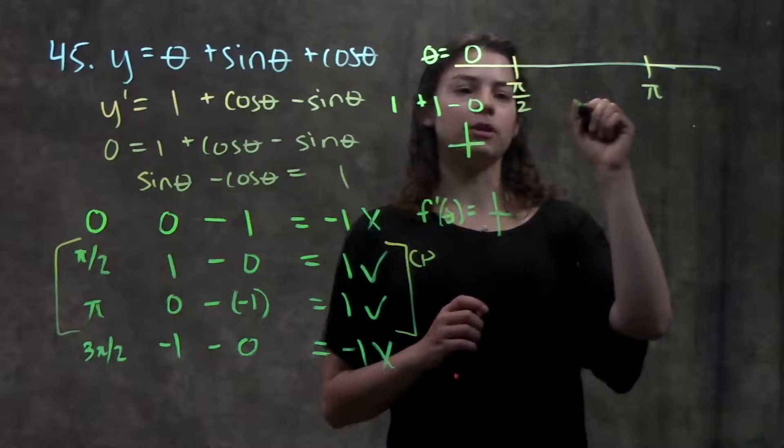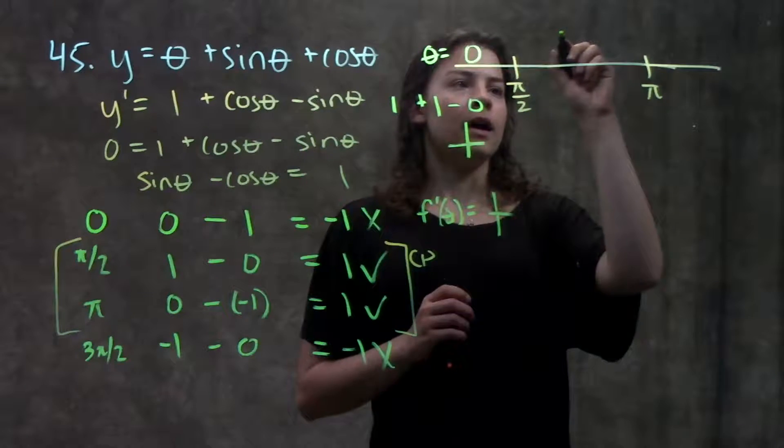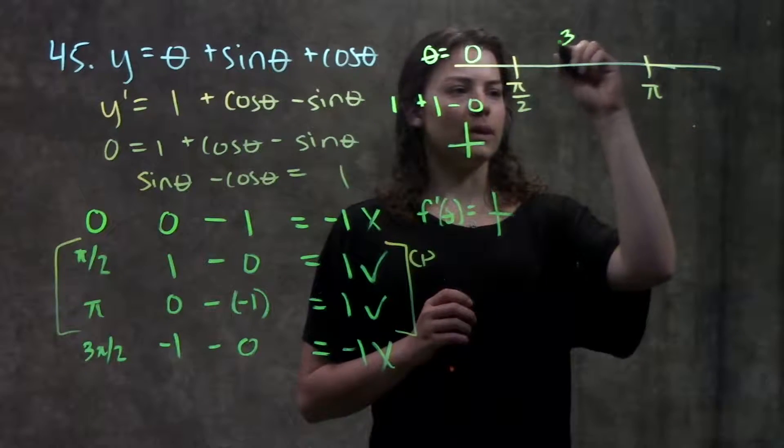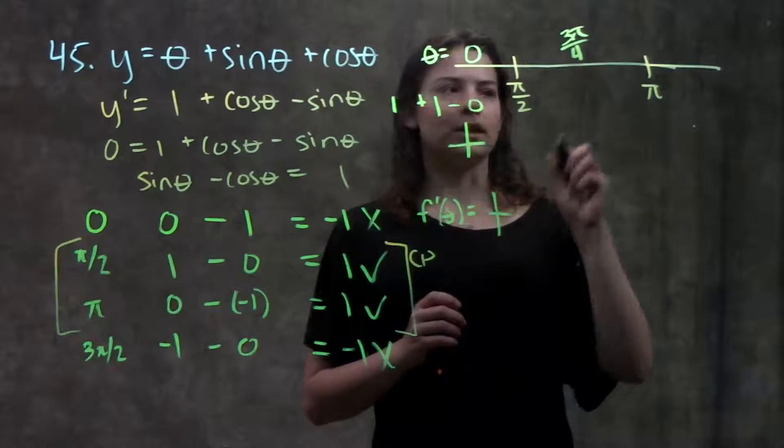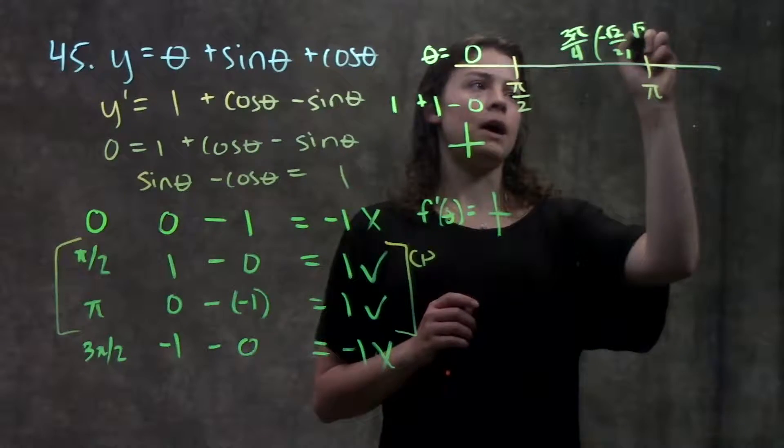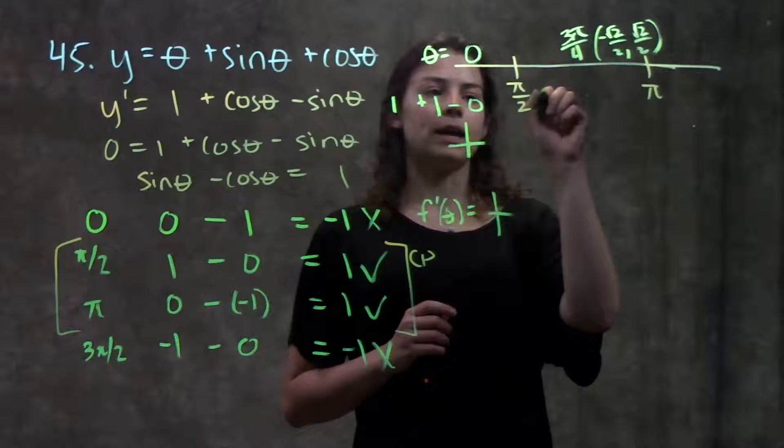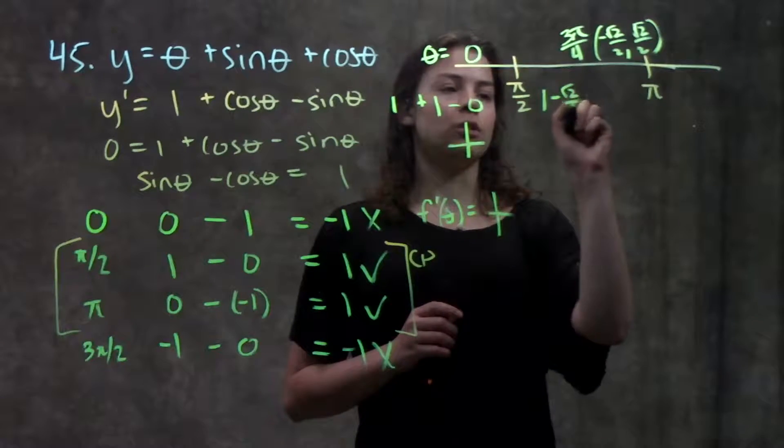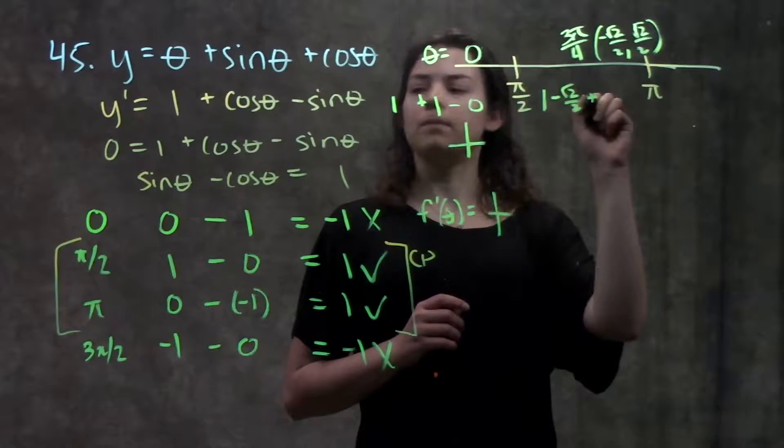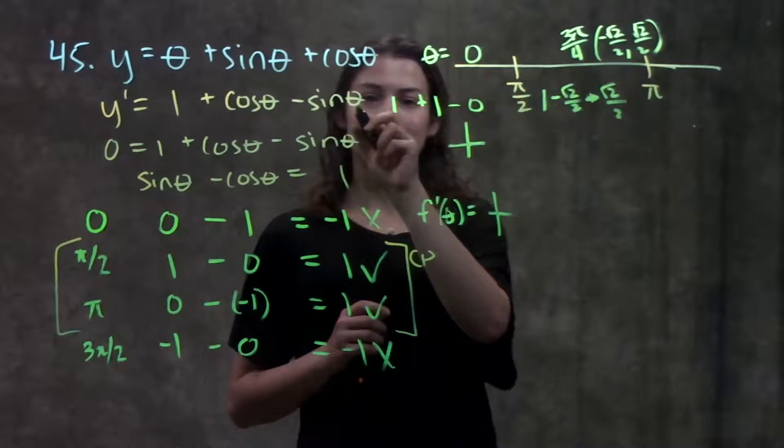In this middle interval between pi over two and pi, let's try three pi over four. That's a good one. And if you remember the coordinates at three pi over four are negative root two over two and positive root two over two. Okay so when I plug that into my derivative, I get one minus root two over two, or sorry, minus root two over two because it's minus a positive.